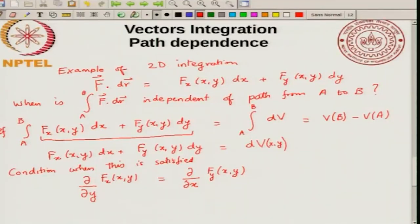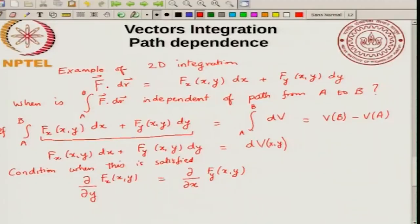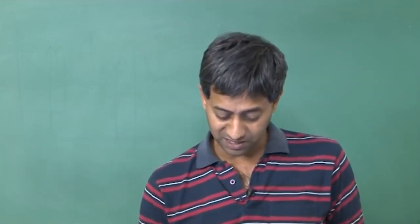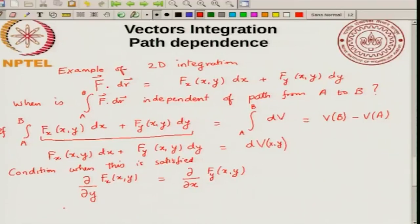This is a useful condition — you can always check whether the work you calculate is path independent or not using this. However, when you say it is independent of path, that means you can take any path and you will always get the same answer. There are cases where an integral might be the same for two different paths but not for other paths. So even if it is path dependent, you might accidentally get the same work for two paths. But when you satisfy this condition, it will be independent for any path.